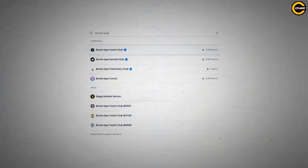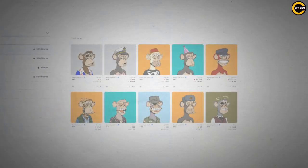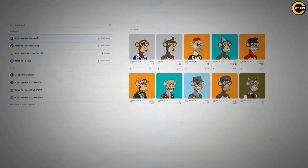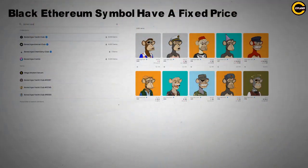Apes with the pink Ethereum symbol are being bid for and have no fixed price. Apes with the price next to a black Ethereum symbol have a fixed price and can be bought immediately.